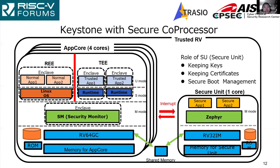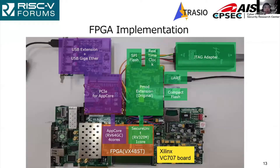This slide shows the trusted RB, which has a secure coprocessor. The secure coprocessor is named Secure Unit — a one-core 32-bit RISC-V. Secure Unit has machine mode only and runs Zephyr real-time OS. It has secure storage to keep keys and certificates. The Secure Unit communicates with the 64-bit RISC-V named AppCore via interrupt and shared memory.